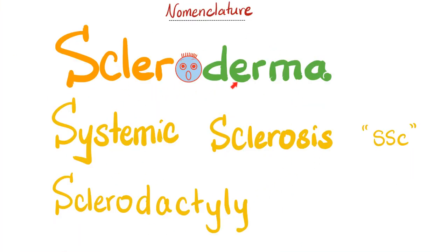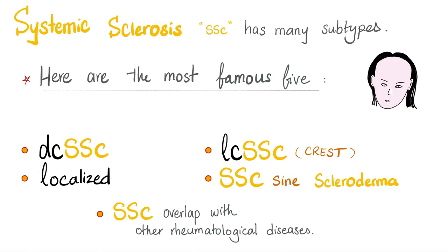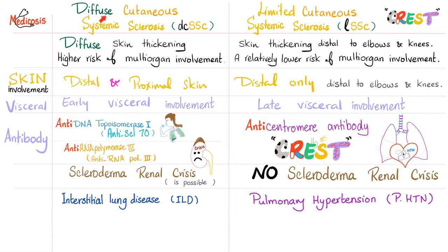Many terms describe this disease, including scleroderma, systemic sclerosis, and sclerodactyly. Systemic sclerosis has many subtypes, but let's classify them into five: diffuse cutaneous systemic sclerosis, limited cutaneous systemic sclerosis (aka CREST syndrome), localized scleroderma, systemic sclerosis sine scleroderma (visceral symptoms without skin symptoms — sine means without), and systemic sclerosis overlapping with other rheumatological diseases. The distinction between diffuse and limited was discussed in the previous video.